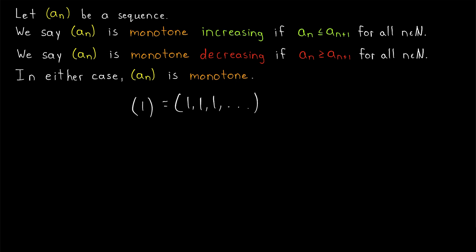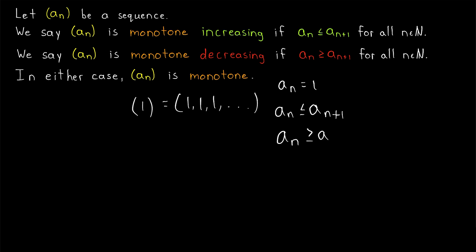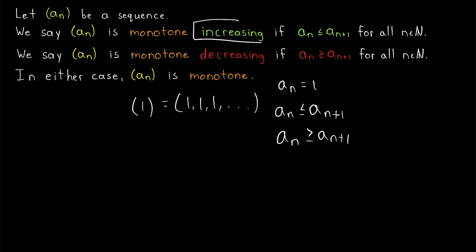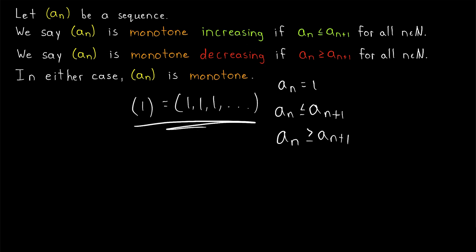Is this a monotone sequence? Indeed it is. In this sequence, a_n equals 1, so a_n is certainly less than or equal to a_{n+1} for every n, because every term happens to equal the next term. Similarly, each term a_n is greater than or equal to the next term since they're all equal. Thus, a sequence like this is monotone — it is both increasing and decreasing. There's no compelling reason to exclude constant sequences from these definitions, so we don't.